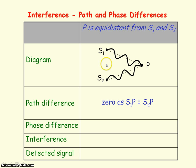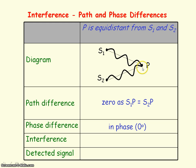If the waves started out in phase and they've travelled the same distance, then they're going to meet in phase at point P. So we say the phase difference is zero degrees, and when waves meet in phase we get constructive interference and a maximum signal will be detected.